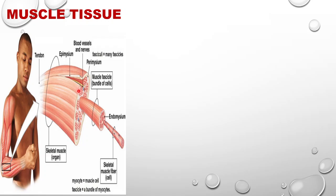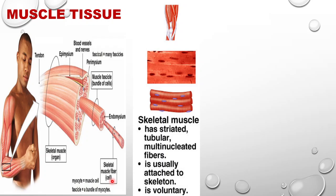Muscles are made up of fibers arranged in bundles, forming the muscle fascicle. Each cell is known as sarcomia. They are slightly modified compared to normal cells. The muscle tissue is also categorized into three types depending upon location: skeletal muscle, which is always attached to bones and to our skeletal system.